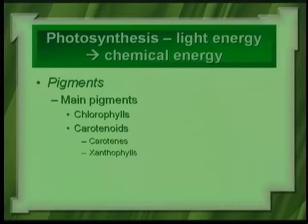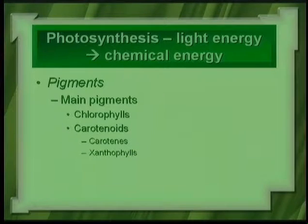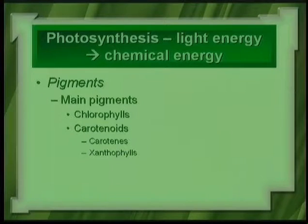You can see the carotenoids in deciduous plants in temperate areas when the trees change color as the cold season approaches. You see yellows, reds, oranges, and browns because the leaf is senescing or dying and the chlorophyll pigments are fading away — so the leaves look orange, red, brown, and yellow because the chlorophyll pigments aren't there anymore.